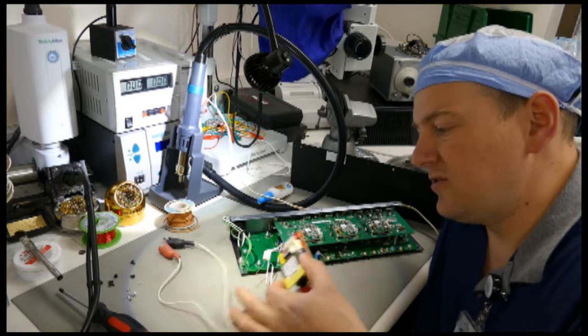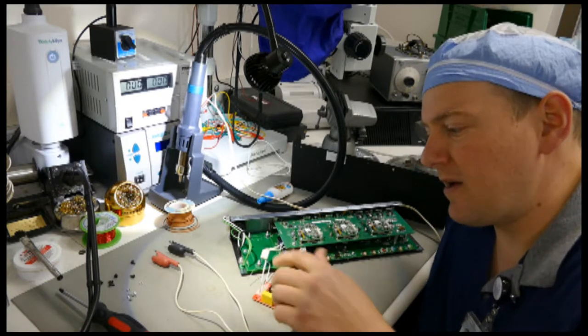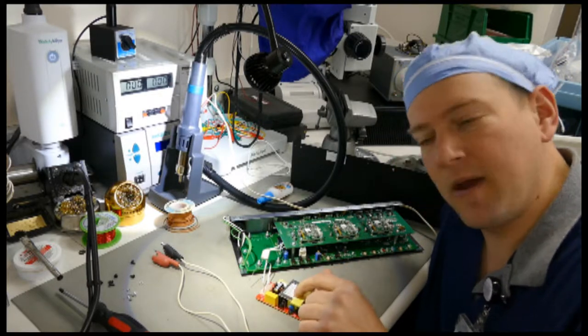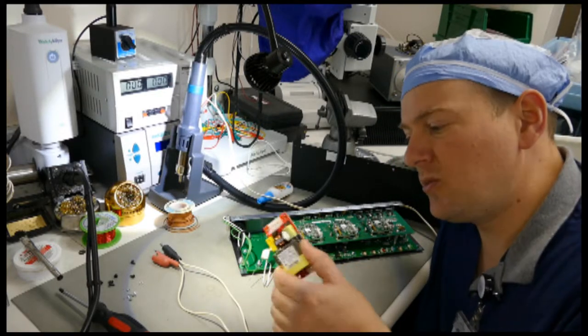So what we have here is the original power supply. You have the AC that comes in on this side, and you have 5 volts, 2.6 amps as your output. So that's your rating.